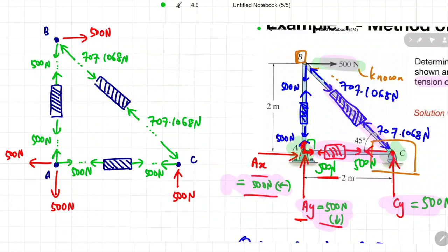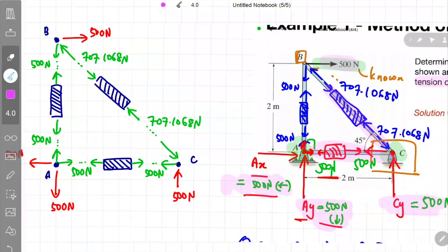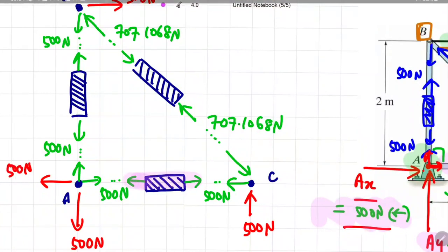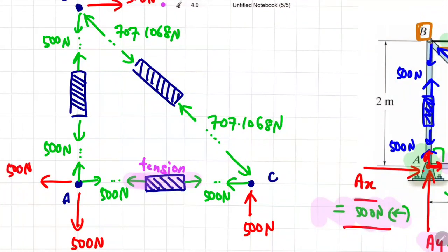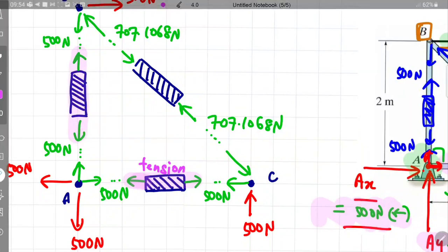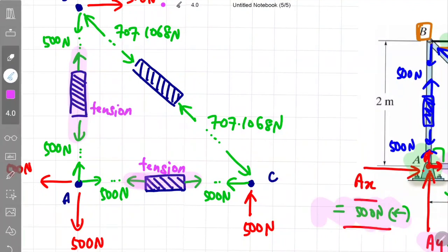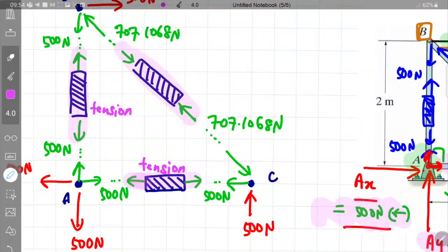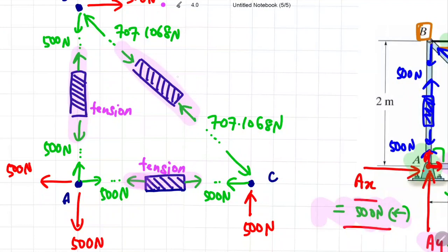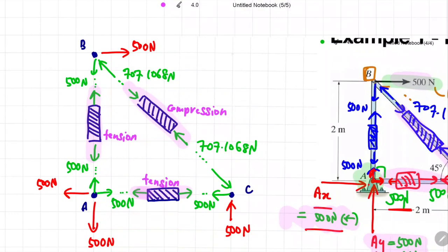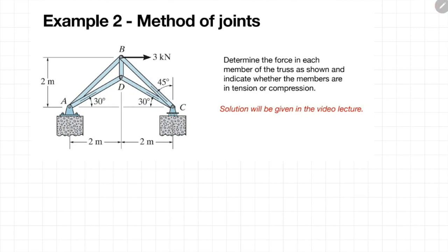We are almost done. The final step is to state the condition of each member. Member AC: forces at each end act outward — tension state. Member AB: forces at each end act outward — tension state. Member BC: forces at each end act inward — compression state. All information is now complete. As this video is approaching 20 minutes, the worked solution will be shown in another short video. Stay tuned.